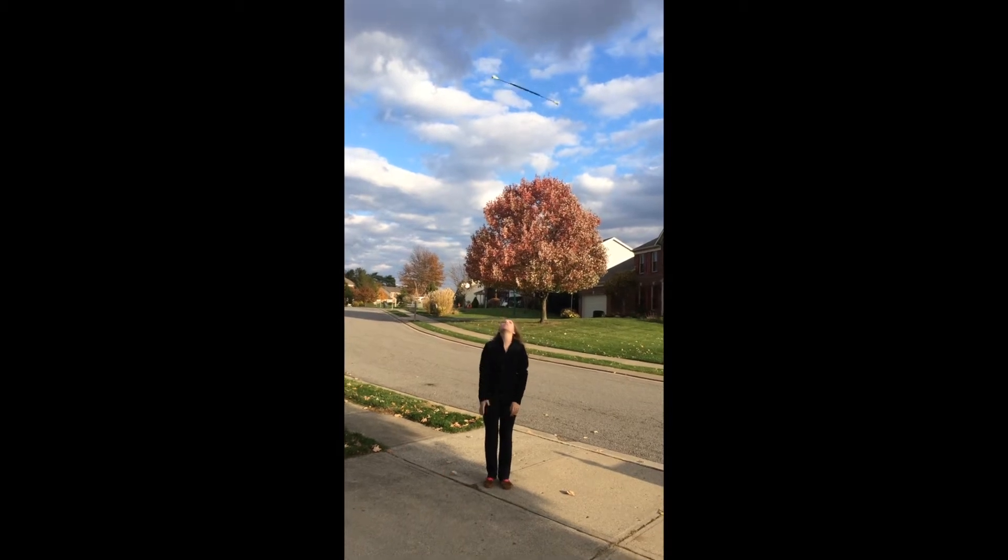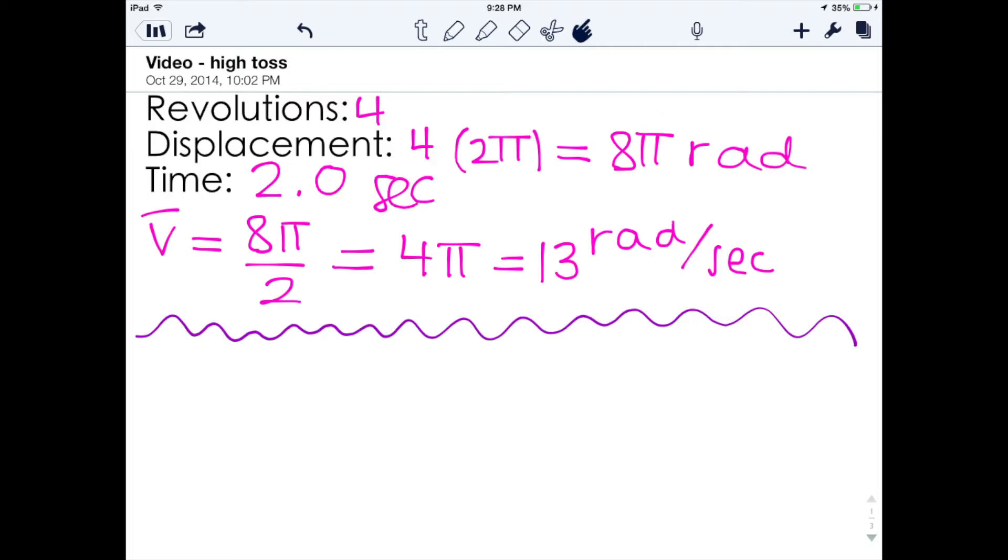The final video we're going to take a look at is the high toss. We can see that the baton here makes 4 revolutions in a time of 2 seconds. So our displacement will be 4 times 2π, which equals 8π radians, and our average velocity will be 13 radians per second using the method in the first two segments.